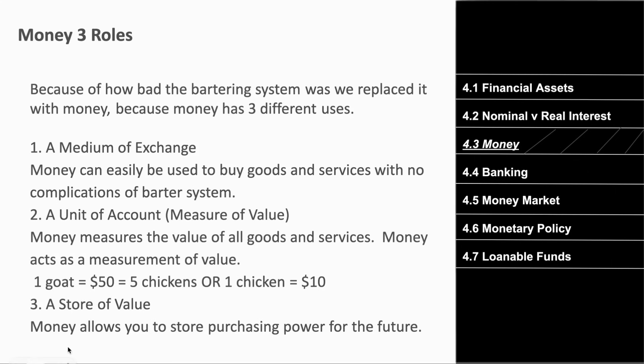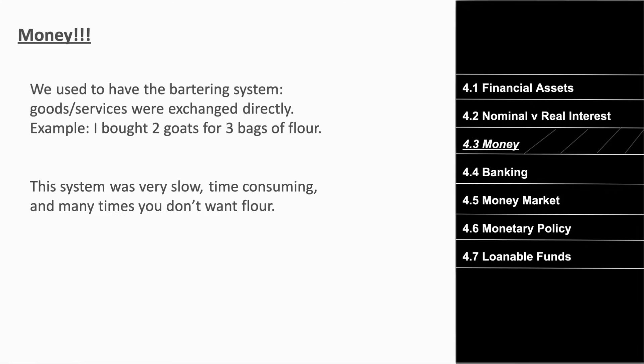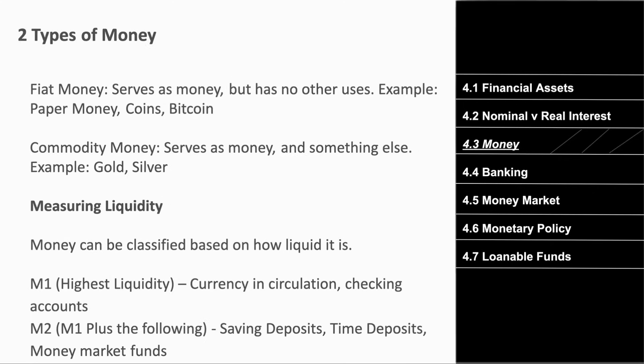Finally, money is a store of value — it allows you to store purchasing power for the future. You can save money in a bank or at home and keep that purchasing power for later. With flour or goats, that's not necessarily always true.